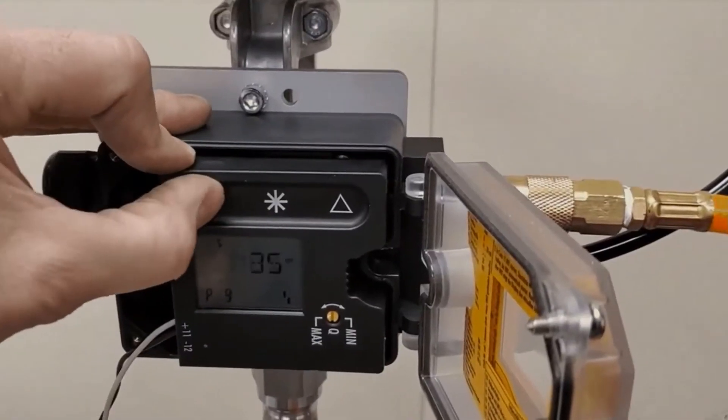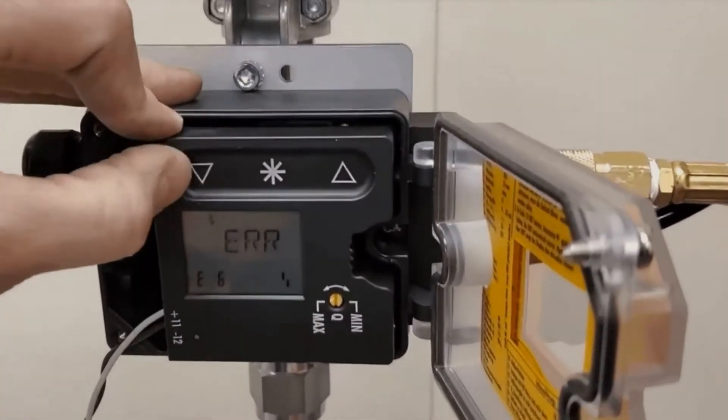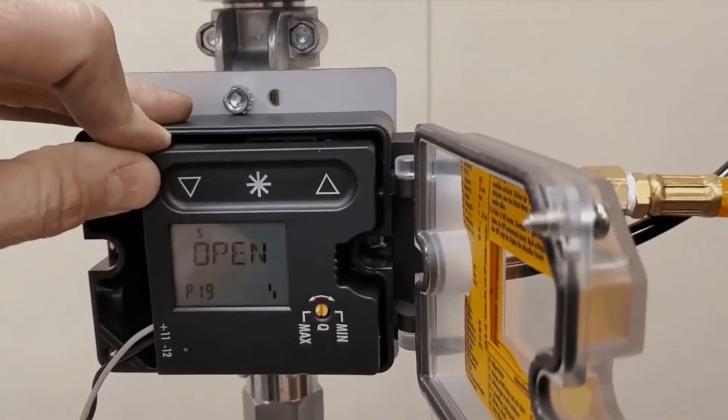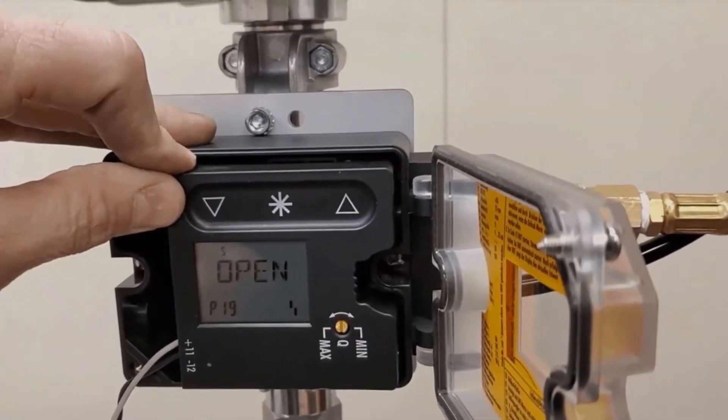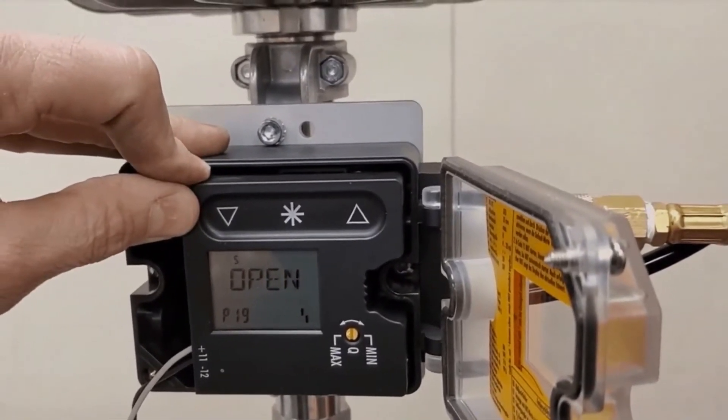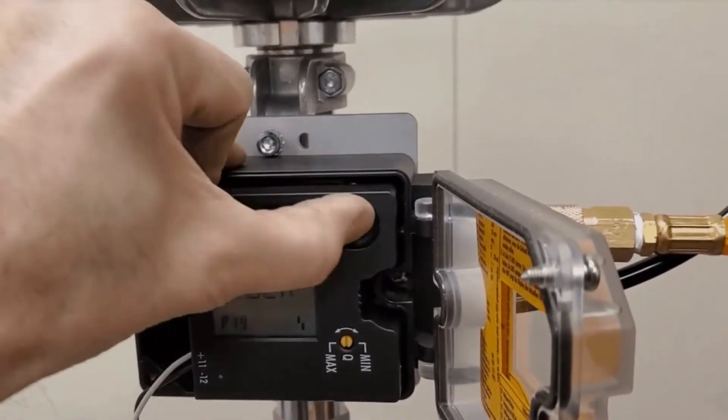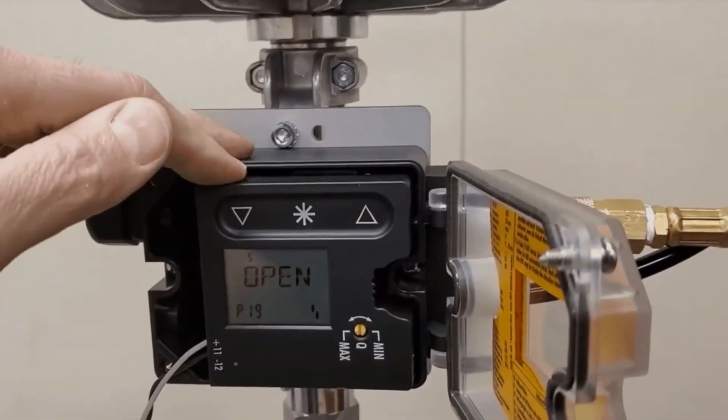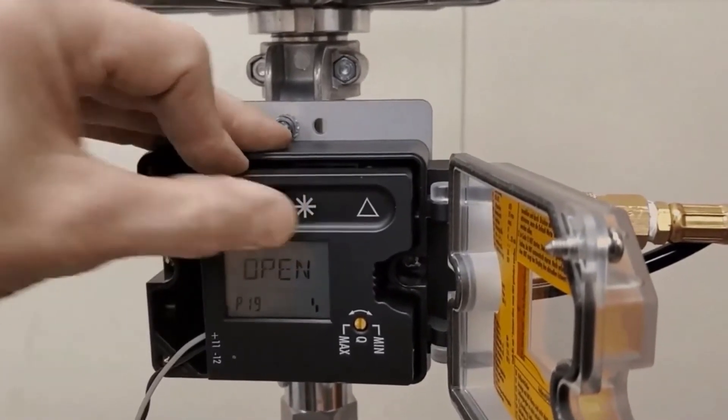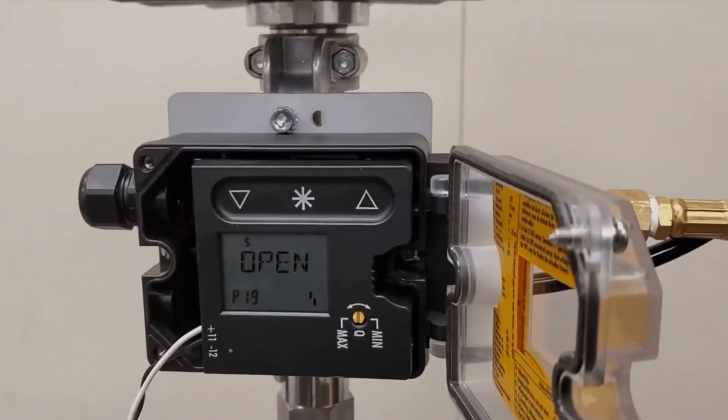Press the star symbol to confirm the selected code. P19 will blink. Press the up arrow until open appears on the display. Press the star symbol to confirm unlocking.